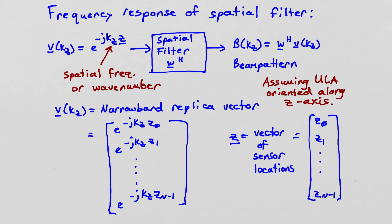So in this case, our complex exponential input is a vector because spatial filters take vector inputs. And it's a vector, a complex exponential vector, where we evaluate e to the minus j kz z. kz is the spatial frequency or wave number. Here, we use the z notation because we're assuming a uniform line array oriented along the z axis. And the vector z is a vector of sensor locations. Okay, so z0, z1 up to z n minus 1 for an n element array.